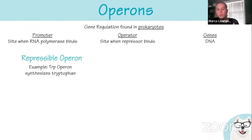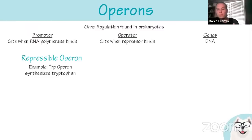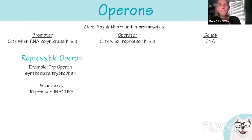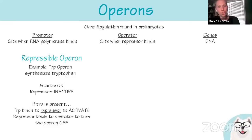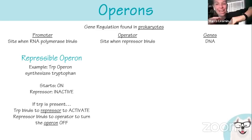The repressible operon example is the trp operon in E. coli, which synthesizes tryptophan. Normally it starts out on. But if tryptophan is present in your gut from food, the E. coli doesn't need to make it. Tryptophan binds to the repressor, activating it. The activated repressor binds to the operator, blocking RNA polymerase. So when the repressor is on, the operon is off — it is repressed.